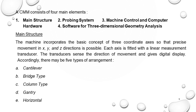This is a simple CMM construction — you can see a granite measurement table giving maximum rigidity, environment sensors, saddle, bridge, and Z-axis moving up and down with the probe fitted to the Z-axis. The bridge can move in the Y direction and the saddle in the X direction. CMM has four main elements: main structure; probing system (probe head and probe); machine control and computer hardware; and software for three-dimensional geometry analysis.